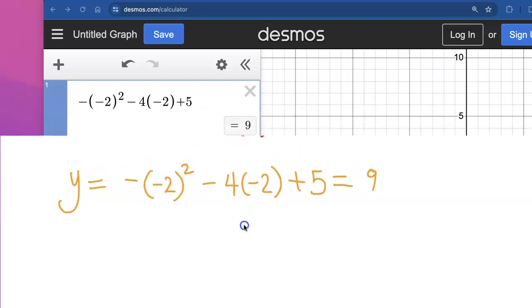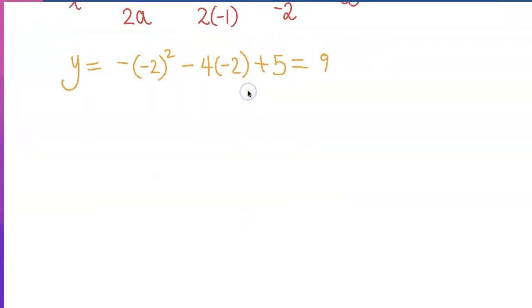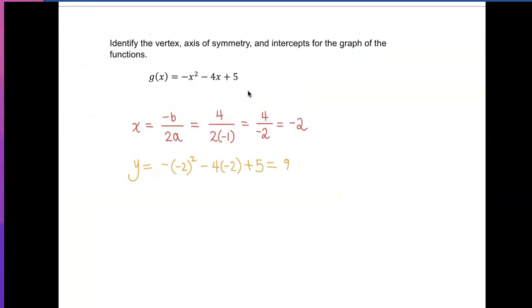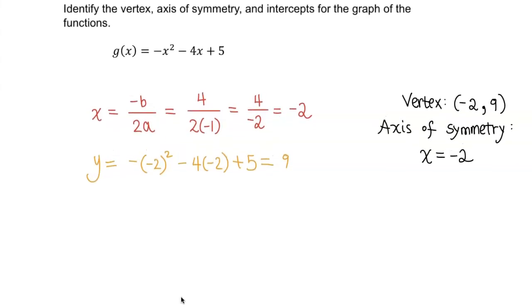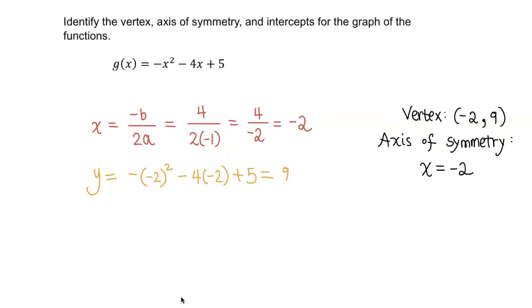So let's write the ordered pair for vertex now. I'm going to zoom out and say that the vertex of this parabola is negative 2, comma 9. Now remember, axis of symmetry is always the x-coordinate of the vertex. So axis of symmetry is x equals negative 2. So we found two parts already.